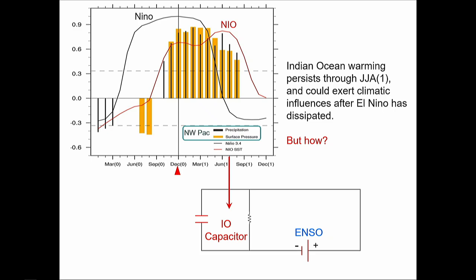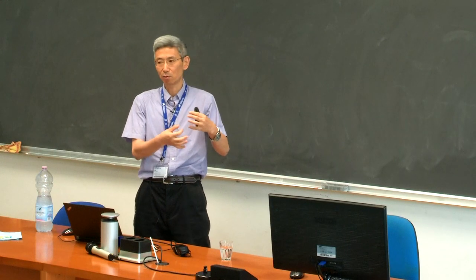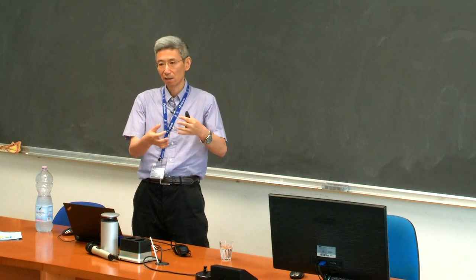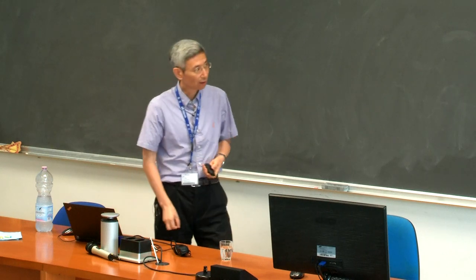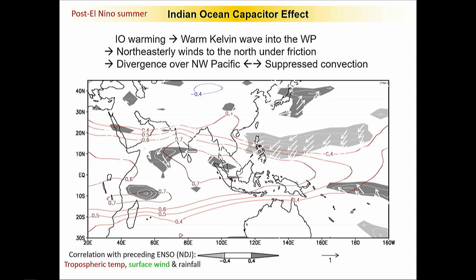Now let me make some mechanistic discussion as to why Indian Ocean warming would have impact on the northwestern Pacific. This shows a post-El Niño summer: the correlation with Niño 3.4 in the preceding winter illustrates post-El Niño summer anomalies in ocean and atmosphere. The Indian Ocean remains warm in the post-El Niño summer. That warming, through a Gill-type or Matsuno-Gill equilibrium adjustment — as Simona discussed this morning — can anchor and drive a Matsuno-Gill pattern: a Kelvin wave propagating east and Rossby waves on the sides. The contour here is the correlation between tropospheric temperature averaged from 850 to 200 mb with the preceding Niño 3.4 SST index.